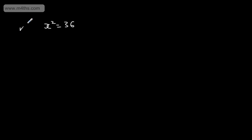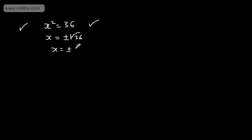In the last video, we looked at solving basic quadratic equations. An example might be x squared is equal to 36. To solve this equation, we simply took the square root of both sides. That gave us that x was equal to plus or minus the square root of 36, and we had x is equal to plus or minus 6. So that gave us our two solutions, plus or minus 6.